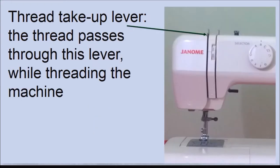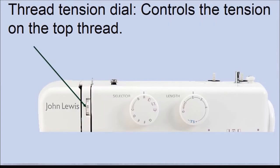Thread take-up lever — the thread passes through this lever while you're threading your sewing machine. Thread tension dial — this controls the tension on the thread that is coming from the thread spool. If the bobbin thread appears on the right side of your fabric, then the tension is too tight. Or if the needle thread loops on the underside of your fabric, then the tension is too loose. The thread tension dial is what you use to adjust this.